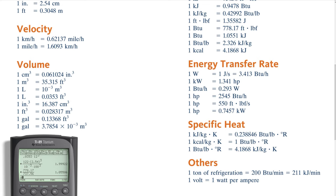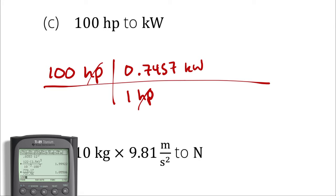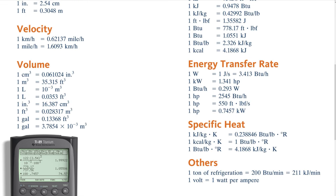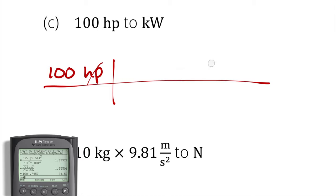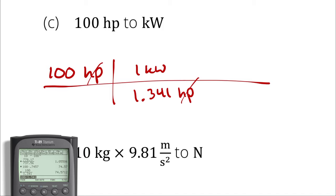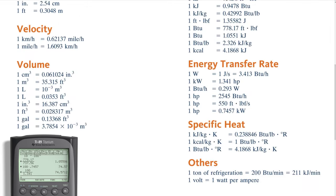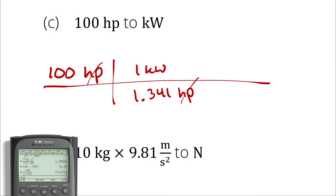I also could have written 1.341 horsepower per kilowatt. Let's try it: 1 kilowatt is 1.341 horsepower in the denominator — horsepower cancels horsepower. 100 divided by 1.341 should yield 74.57. In this situation, I would recommend using whichever form is most convenient for you to get right consistently. I generally prefer to write quantities in the numerator because I don't like dividing by quantities that require parentheses. Don't worry about three versus four decimal points of precision — the error in these calculations will be much wider than that introduced by the unit conversion steps.